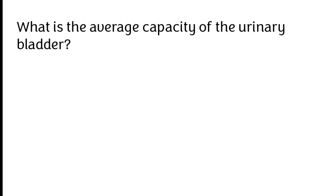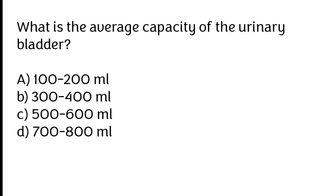What is the average capacity of the urinary bladder? A) 100 to 200 ml, B) 300 to 400 ml, C) 500 to 600 ml, D) 700 to 800 ml.